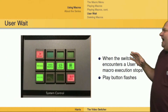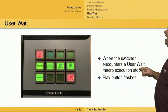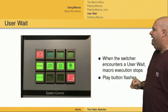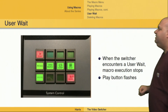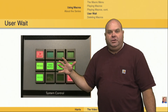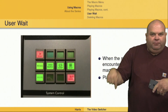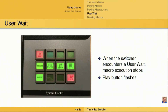As far as a user wait — if we have recorded a user wait as part of our macro, as soon as the switcher encounters the user wait in that macro execution, the execution of that macro is going to stop and the play button is going to start flashing. It's saying you're in the middle of a macro — do you want to play it from the point that you paused at? In other words, it's going to play the macro, encounter the user wait, and start flashing the play button. That's your cue for pushing additional buttons on the switcher and getting something ready. Then you can reach up, push that play button, and it will finish execution of that macro.